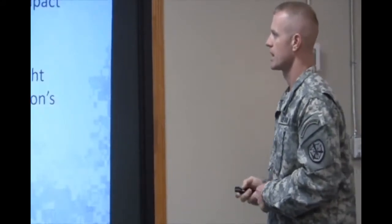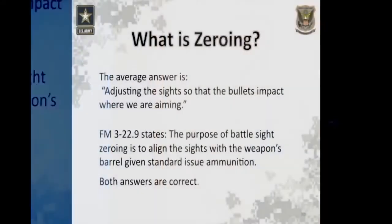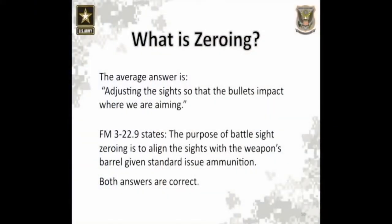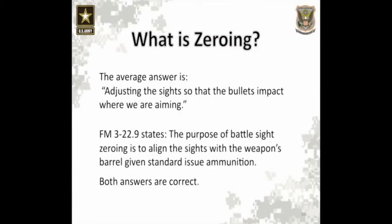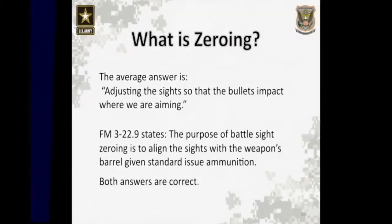What is zeroing? The basic answer is nothing more than adjusting the sights so the bullet's impact is where we're aiming. FM 3-22.9 states the purpose of a battle sight zero is to align the sights with the weapon's barrel given standard issue ammunition. Both answers are correct, and we're going to discuss each of those a little bit.